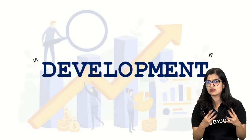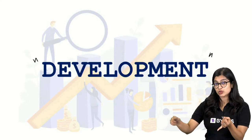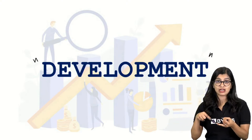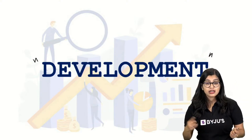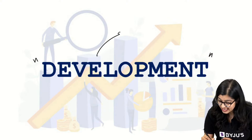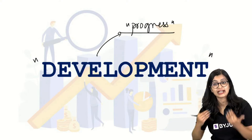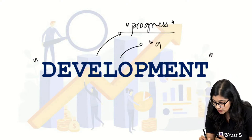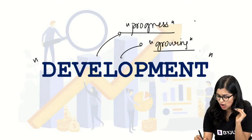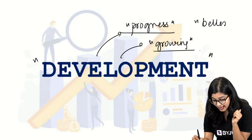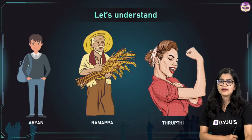Development is a very comprehensive word — we use it in biology, technology, and for countries. Simply put, development can be understood as progress — we are making things better or growing. So let's keep these ideas in mind: progress, growth, and betterment — something becoming better.